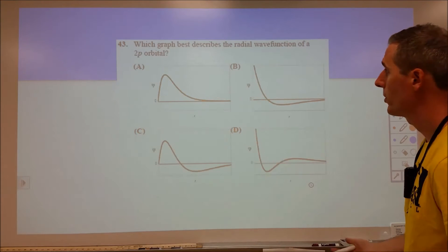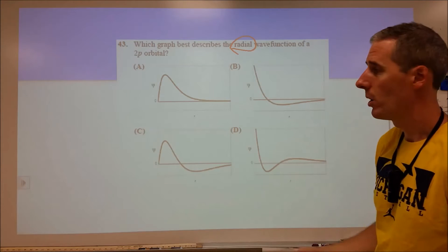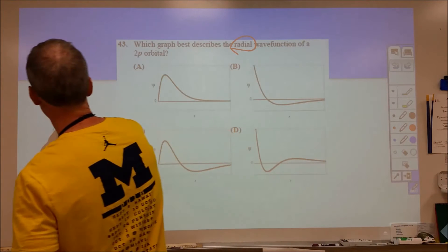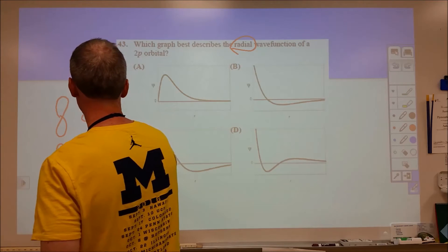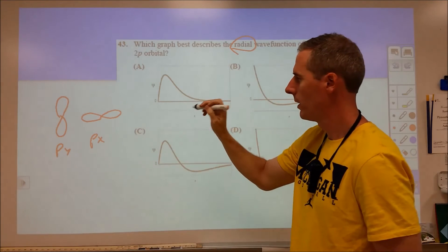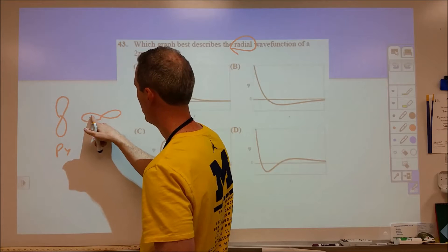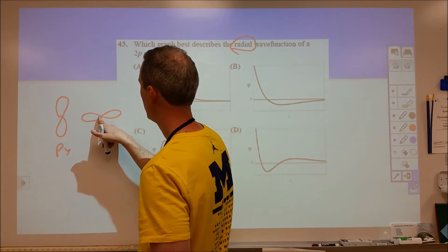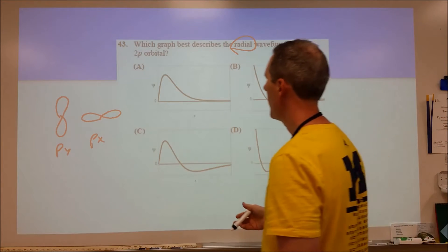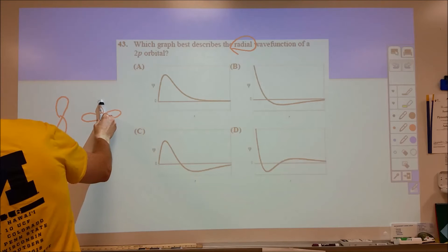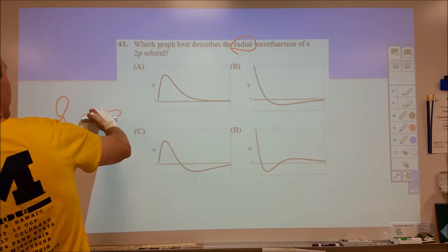Question 43, many of you probably get to this and aren't really sure what's going on. Which graph best describes the radial wave function? If we talk about radial wave functions, let's draw a couple p orbitals, a p-y orbital and a p-x orbital. There's two ways to describe these. One is radial and the other is angular. In an angular sense, I'm looking for how the electron density changes or how the wave function changes as I move around in an angular sense.